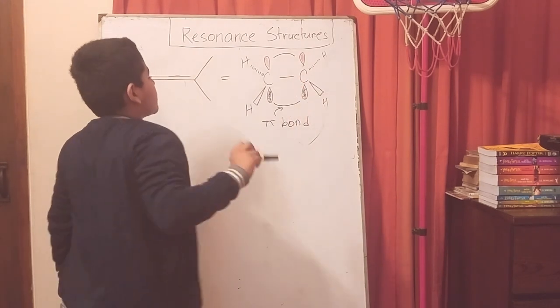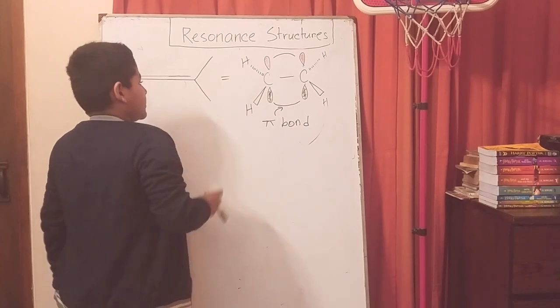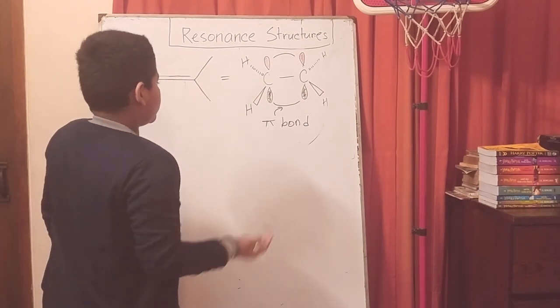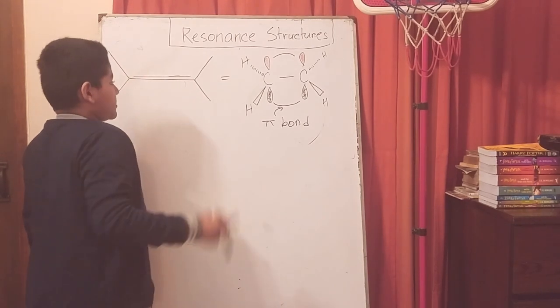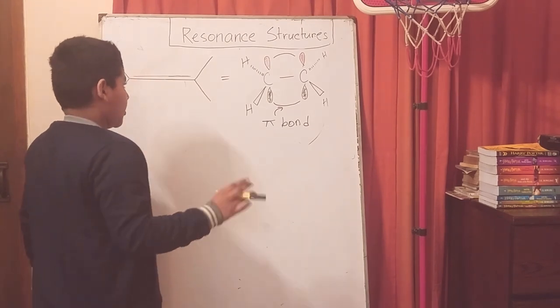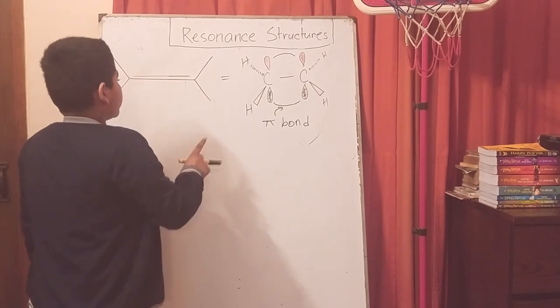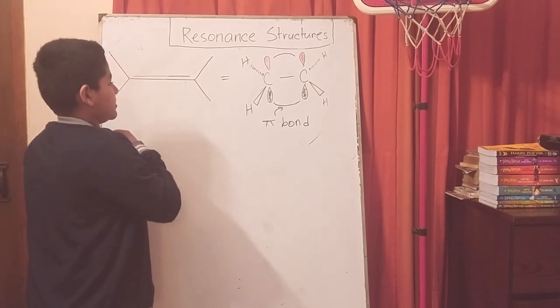This carbon-carbon bond is a sigma bond, since the rules state that if there's a double or triple carbon bond, there is one sigma bond and either one or two pi bonds.